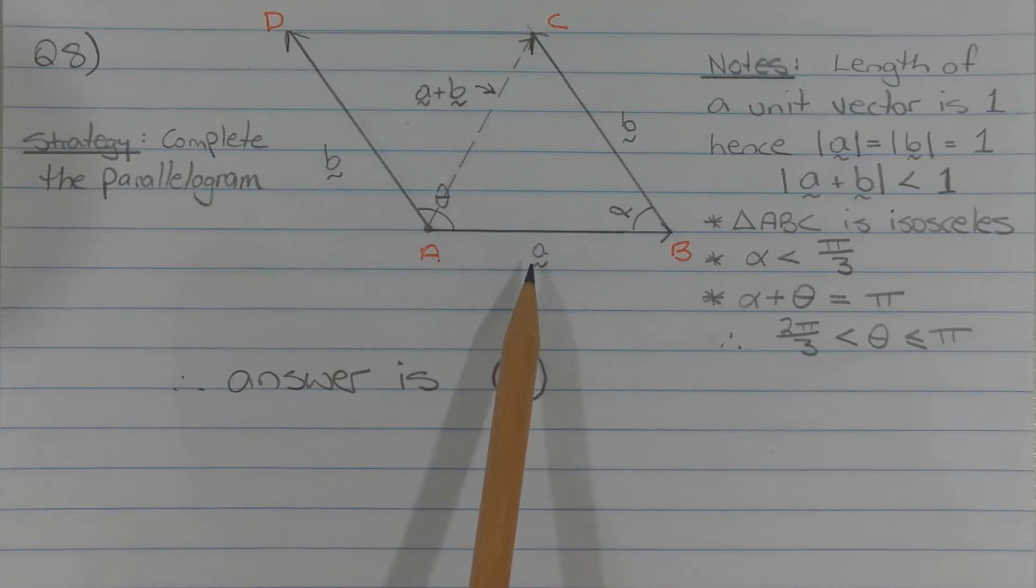From the end of vector A, that is from the arrowhead of vector A, I've drawn another vector that is in the same direction and equal in magnitude to vector B, and that's this vector BC, thus completing parallelogram ABCD.